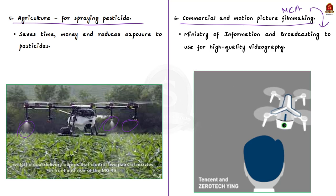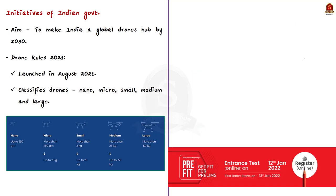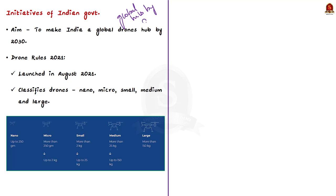Since drones can be used in all sectors, the Indian government is aiming to make India a global hub for drones, probably by 2030. For this, many steps and initiatives have been rolled out. First, the Liberalized Drone Rules 2021 was launched in August 2021, classifying drones into nano, micro, small, medium, and large categories.